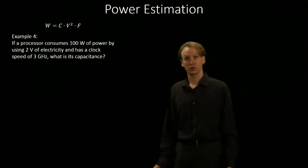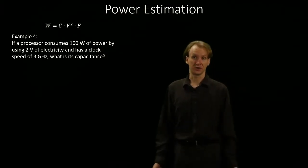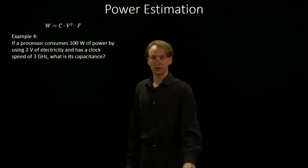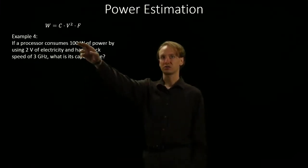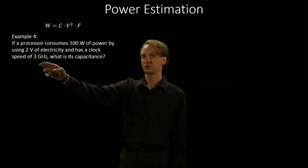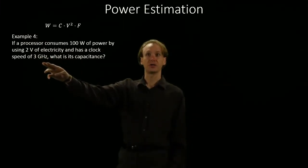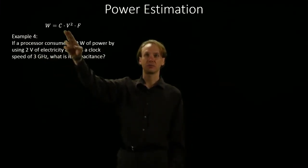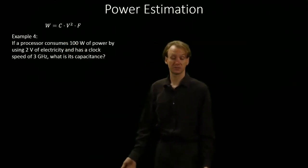We can also work backwards through our equation, solving for one of the other variables in the equation. So in this example, we have a processor that has 100 watts of power. It's using 2 volts of electricity to run at 3 gigahertz. So we'd like to know what the capacitive load of this processor is.